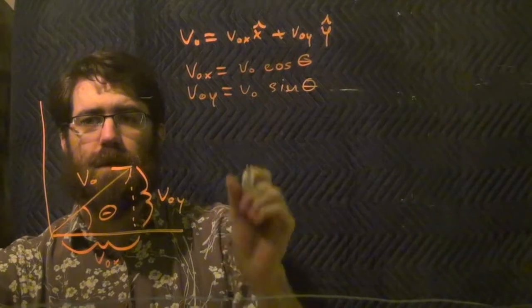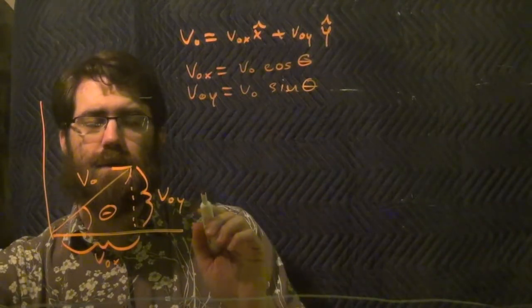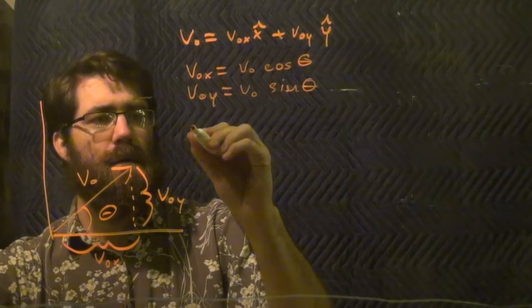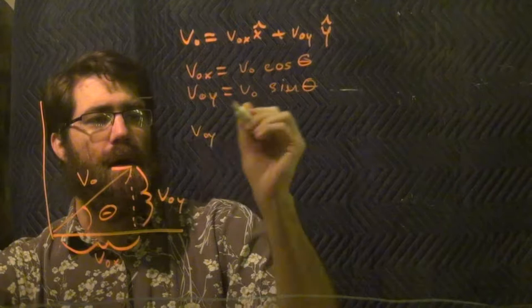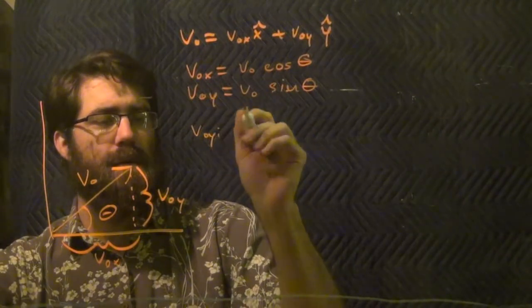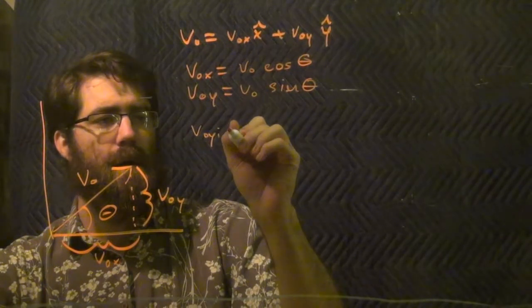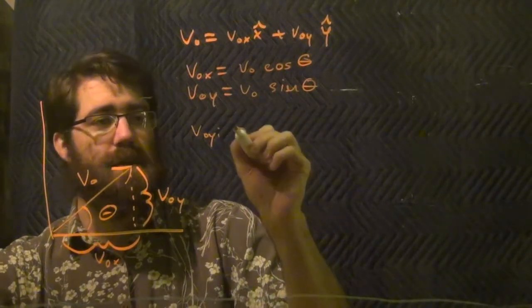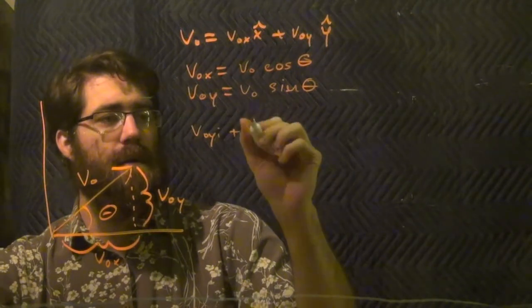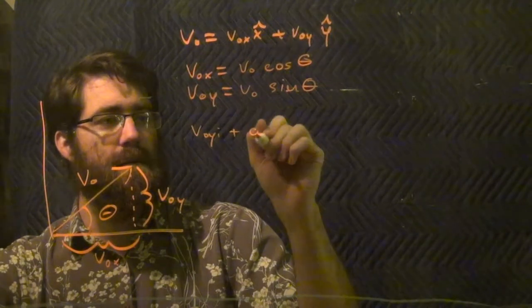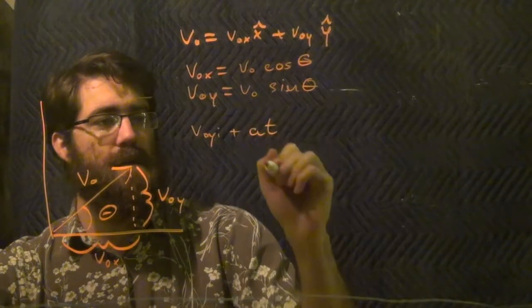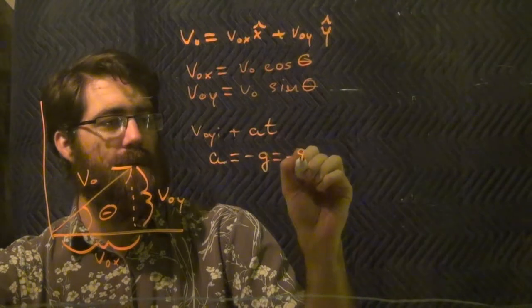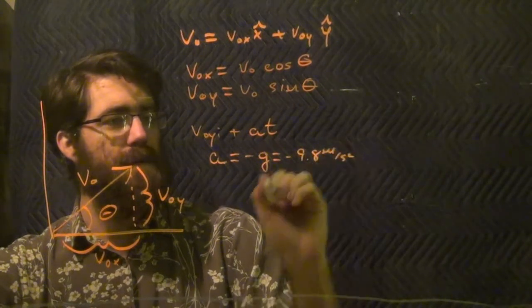Once we have that, we know that the acceleration only acts in the y direction. So we can find the time of flight with our v-naught y initial being our v-naught sine theta, which is going to suffer an acceleration a times t. And here, a will equal negative g, or negative 9.8 meters per second squared on the surface of Earth.